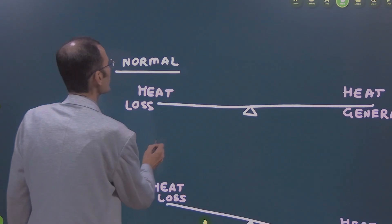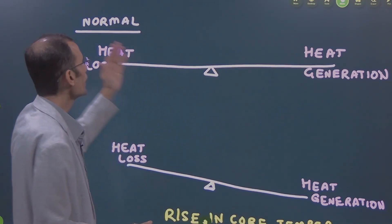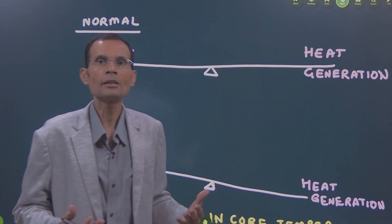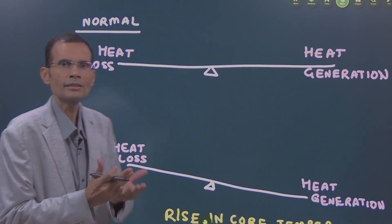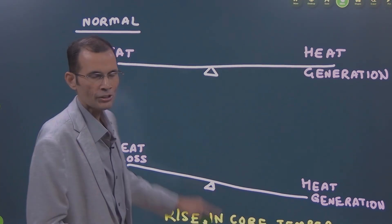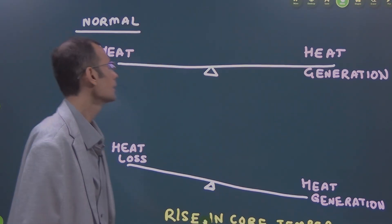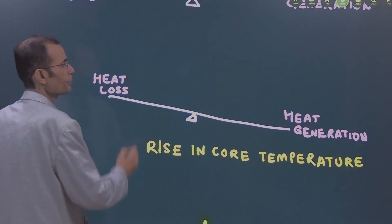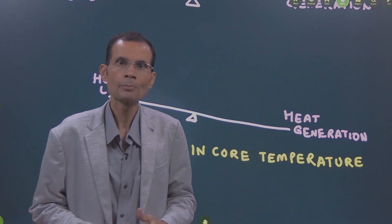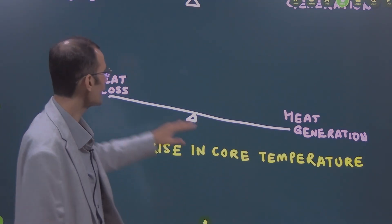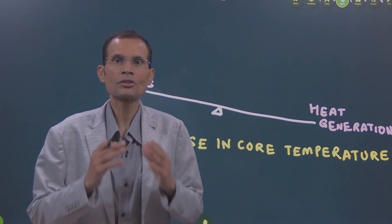Under normal circumstances, we have a fine balance between heat generation in the body and heat loss from the body. We generate heat because of the BMR and physical activity. There are heat loss mechanisms and a fine balance between the two so that the body temperature is held constant at the normal level of 37 degrees centigrade. But if heat generation becomes excessive and overwhelms the heat loss mechanisms, the body will start gaining heat and body temperature will rise, resulting in heat related illnesses.